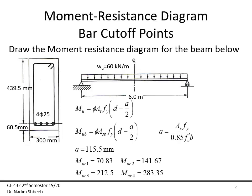Let's assume I have a simple beam with a span length of 6 meters. The ultimate load is 60 kN/m. The effective depth d is 439.5 mm, the cover to the center of the steel is 60.5 mm, and the total width is 300 mm. I can now calculate the ultimate moment provided by four 25mm bars.